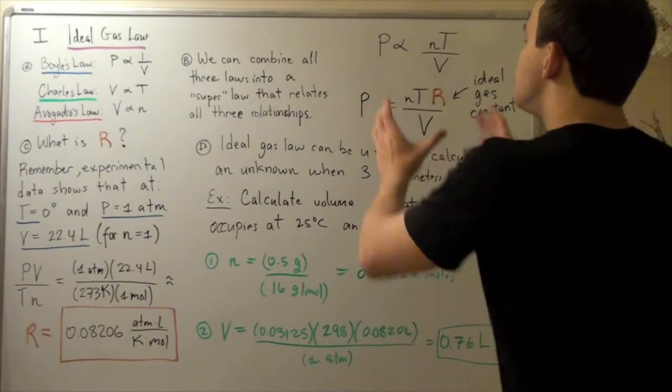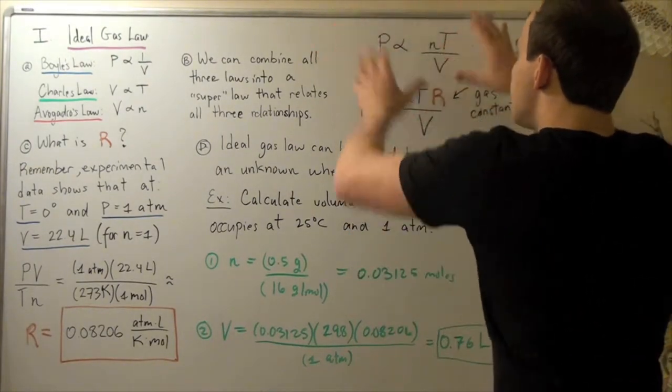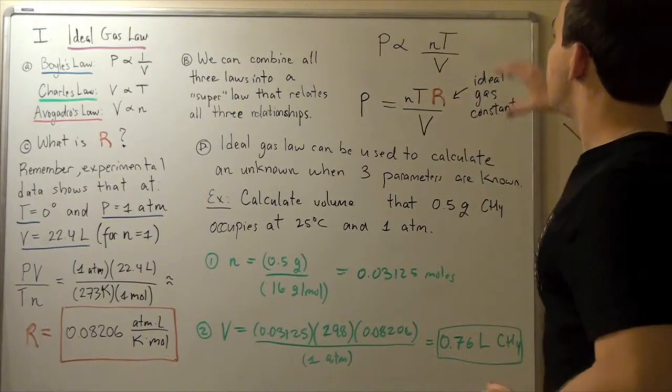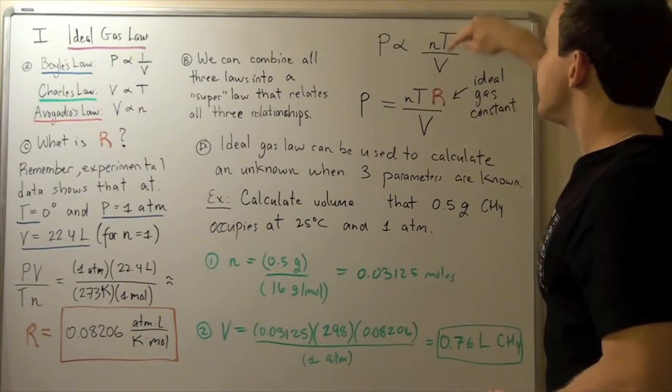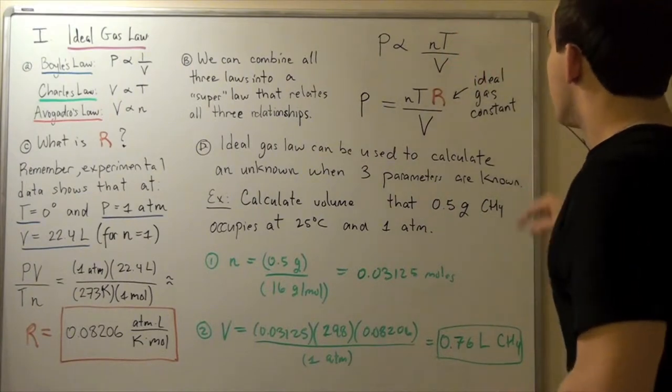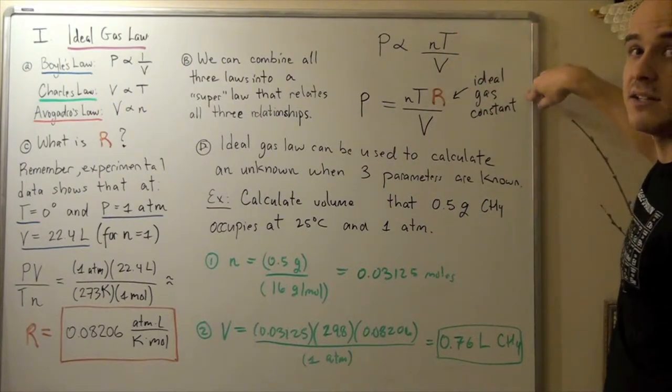The way we adjust this so that we can equal them is by multiplying our right side or adjusting our right side by some constant R. This is known as the ideal gas constant.